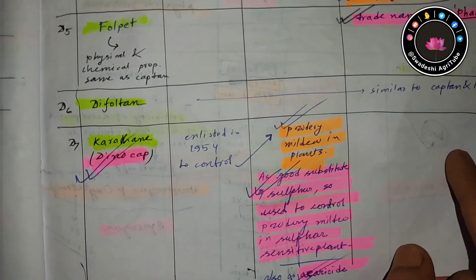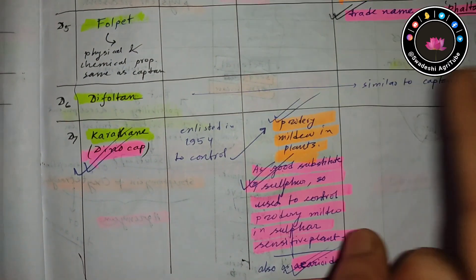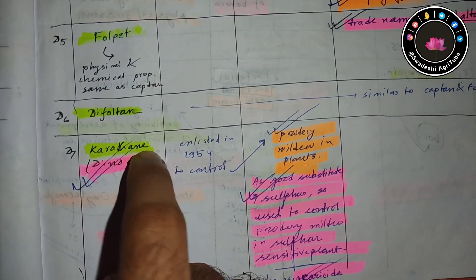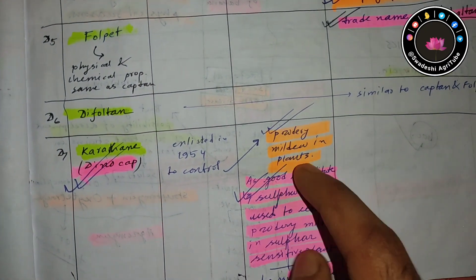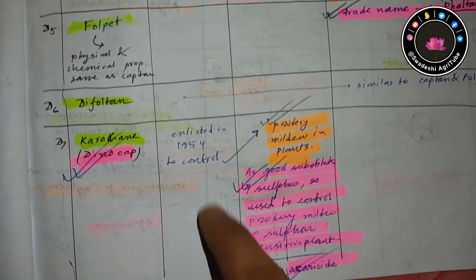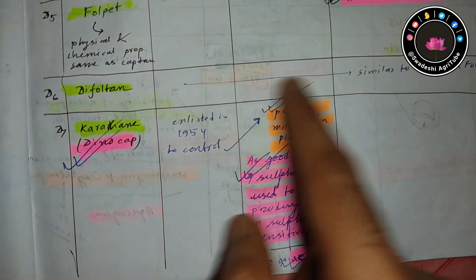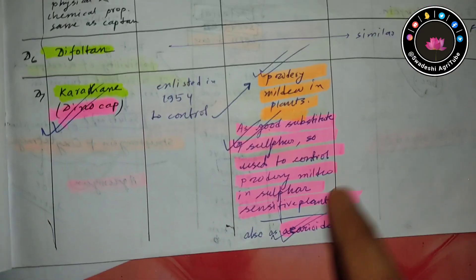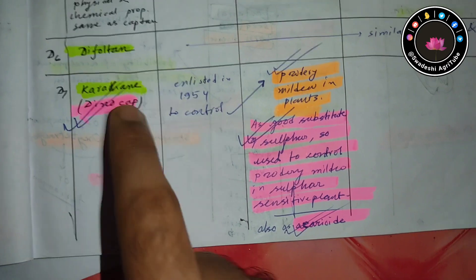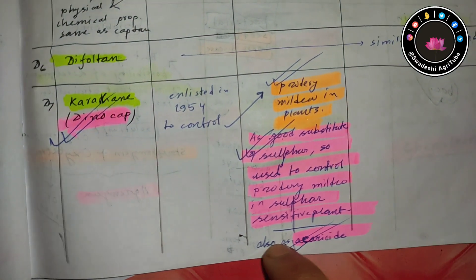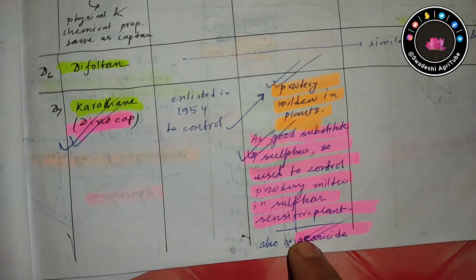In that case, you use karathane to control the powdery mildew in sulfur-sensitive plants. Here is one very important point. Another point is that karathane can also be used as an acaricide. Remember these points very carefully because all these videos are from examination perspective, and we must not skip any point.